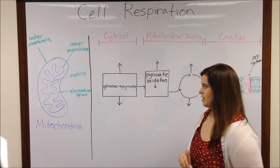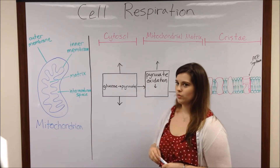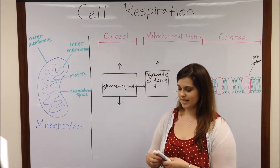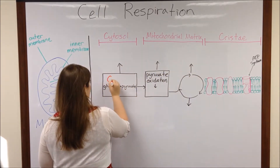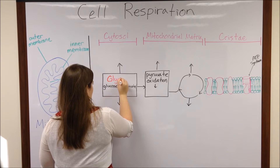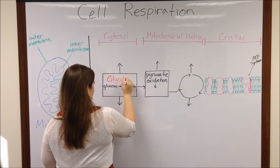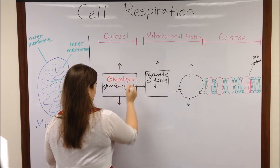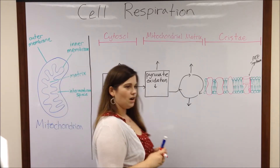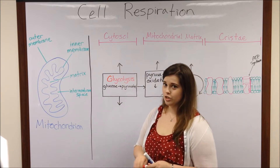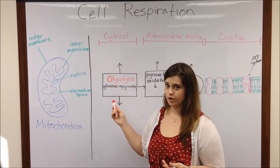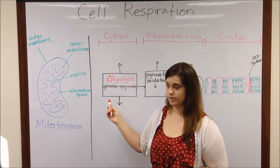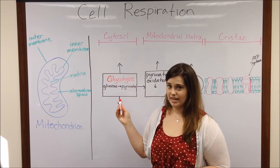Cell respiration begins with something called glycolysis. Glycolysis literally means sugar splitting — glyco means sugar, like glucose, and lysis means splitting.